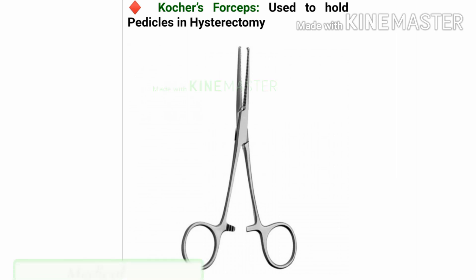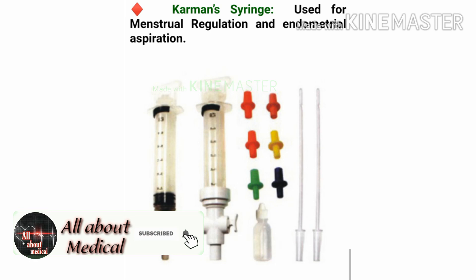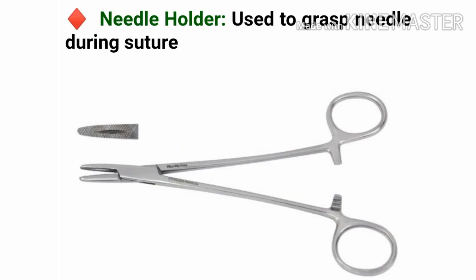These are Karman's syringes. They are used for menstrual regulation and endometrial aspiration. This is the needle holder, and it is used to grasp the needle during suturing.